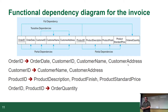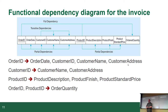Here are the functional dependencies — using the little arrows is actually really handy. The order ID has the following columns functionally dependent on it: order date, customer ID, customer name, and customer address. The customer ID has the customer name and the customer address. The product ID has the description, the finish, and the standard price. The combination of the primary keys — product ID and order ID — means quantity is fully dependent on both parts of the primary key.